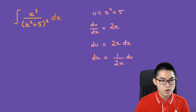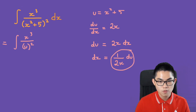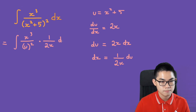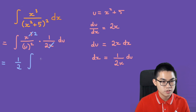Now let's go ahead and change this to u-form. We get x to the power of 3 over u squared, times 1 over 2x du. We can cancel one x, leaving x squared, and move the 1/2 outside the integral. So we get 1 over 2 times the integral of x squared over u squared du.